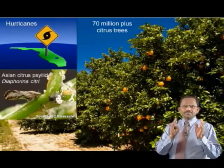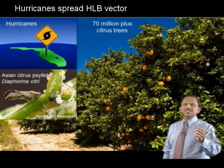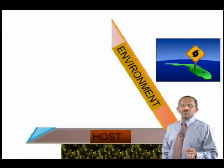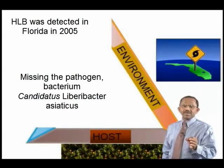The state of Florida has the perfect conditions for HLB. It is hot and humid, has lots of hurricanes, more than 70 million citrus trees, and billions of HLB vectors called Asian citrus psyllids. But if you remember the core concept, you will know that those conditions alone won't produce the disease. The missing link is the pathogen Candidatus Liberibacter Asiaticus.